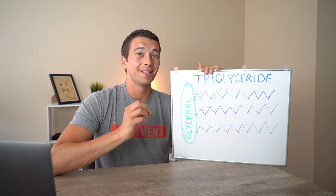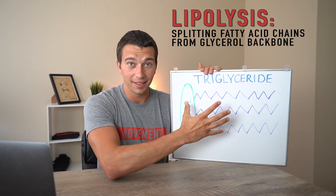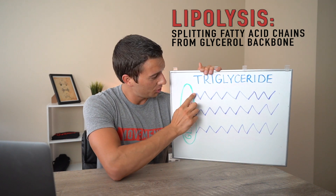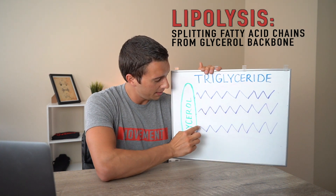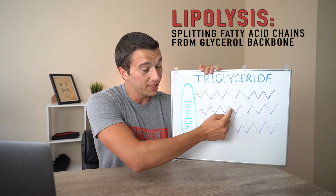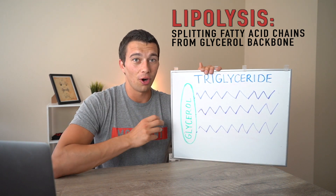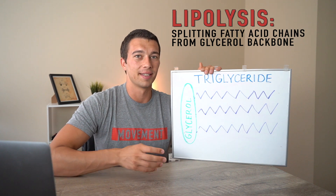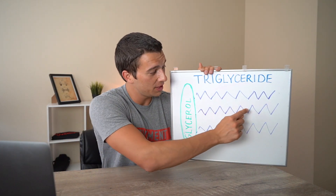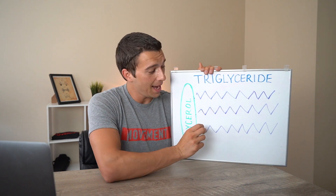When we talk about the process of lipolysis, lipolysis is simply splitting the glycerol backbone from the fatty acid chains. We split them apart, producing a free fatty acid and a separate glycerol — that's the process of lipolysis, and it's carried out by the enzyme lipase.